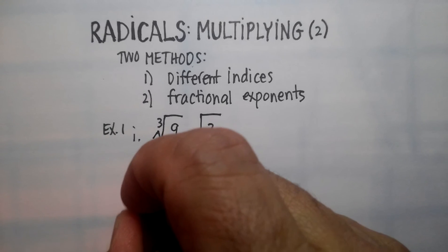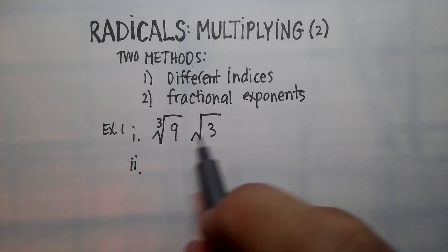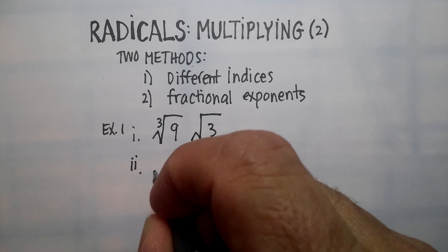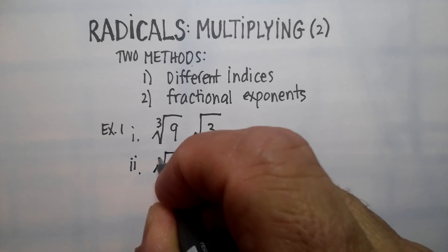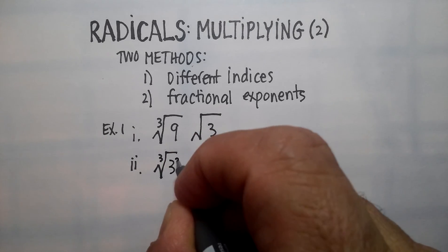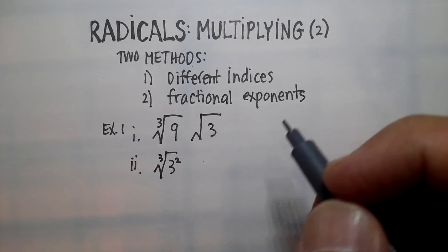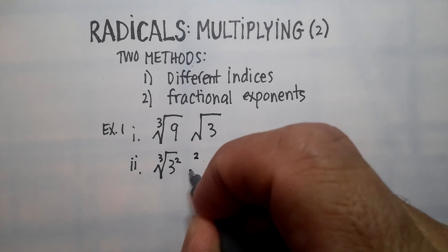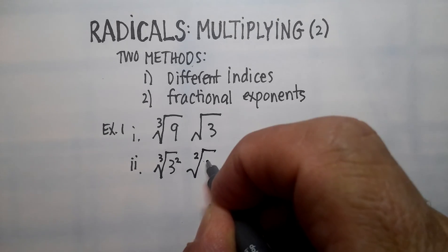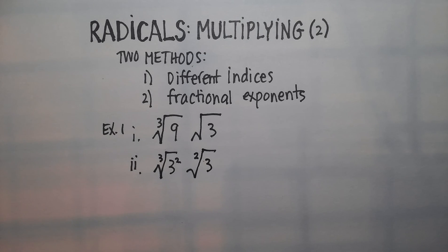I can't just multiply the radicands, the numbers under the radical sign. Here's one way you can do this. I normally always factor the radicands themselves to prime factors. Okay, so for example, I would have the cube root of three squared, because nine is just three squared. And this would stay the same. I'm just going to put the two in there so you can see it. Okay, and there we have it.